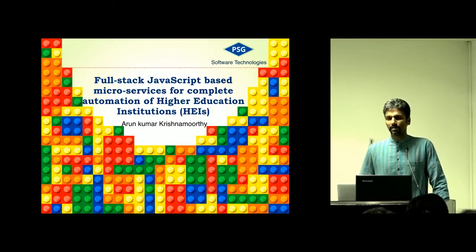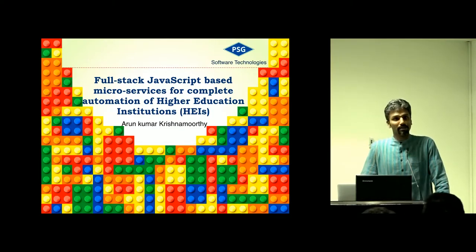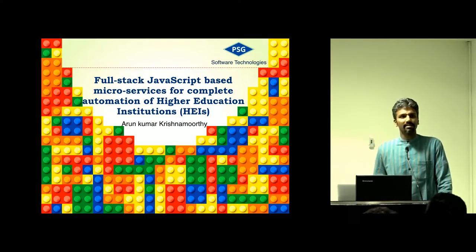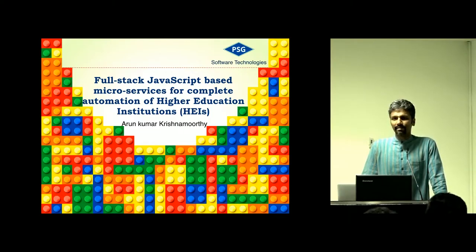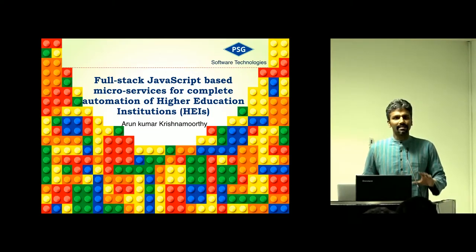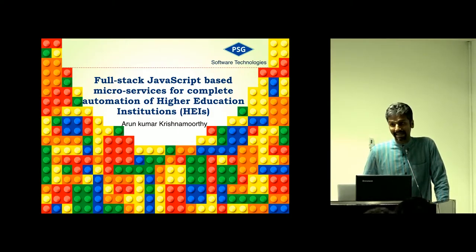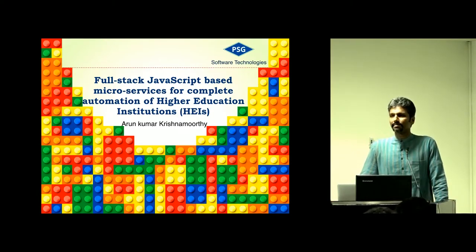XML is nowhere now. Everyone talks about JSON, JavaScript everywhere. Now Python and JavaScript are competing with each other. I was loyal to Java - even if given a project on .NET, I would use something in Java. I started in Emacs editor, then moved to Eclipse, and without IntelliSense working I don't want to write any code. That's why I became handicapped.